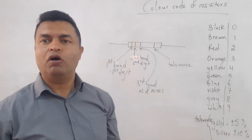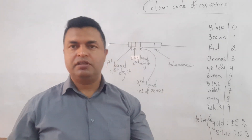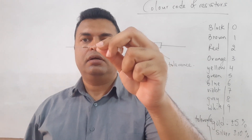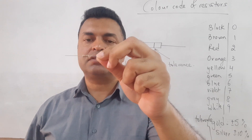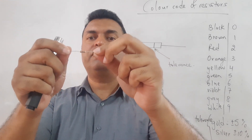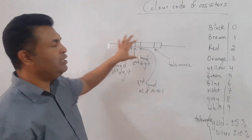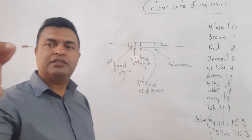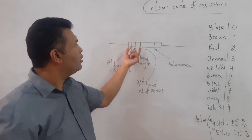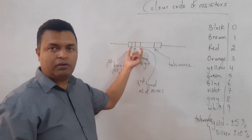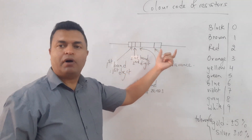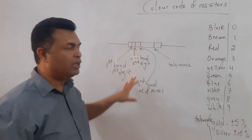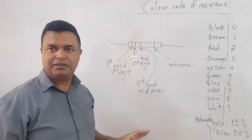Now we come to color codes of resistors. This is a carbon resistor with four bands of different colors. You will see that three bands are close to each other and one band is slightly farther away. These three close bands give you the digits needed to determine the value of the resistance.